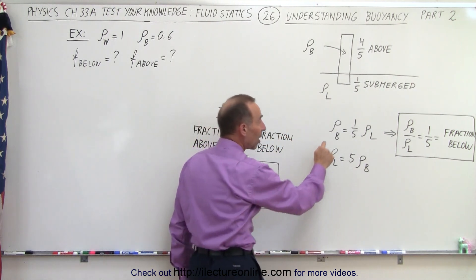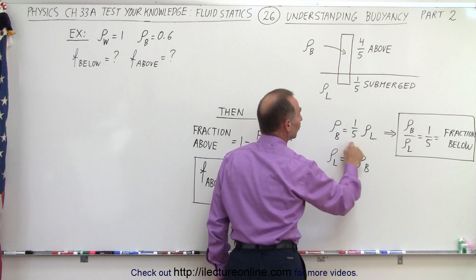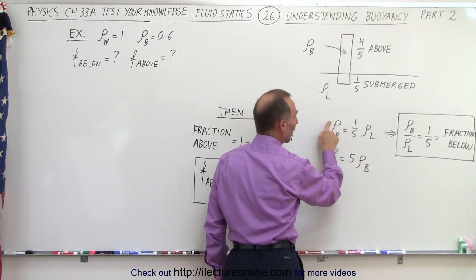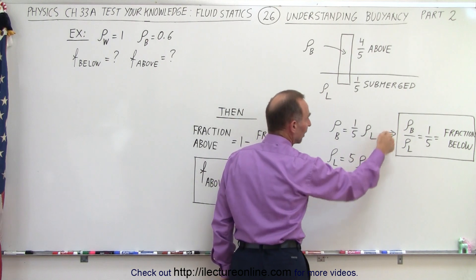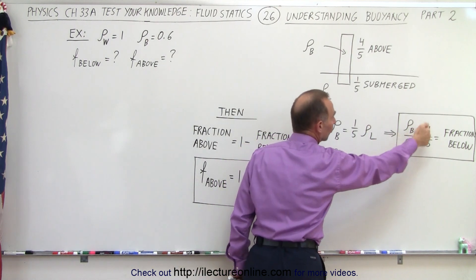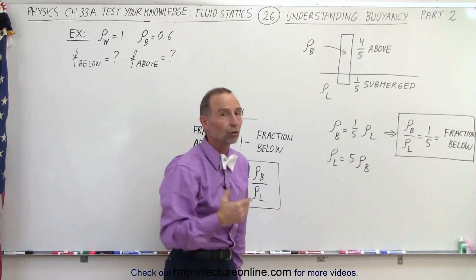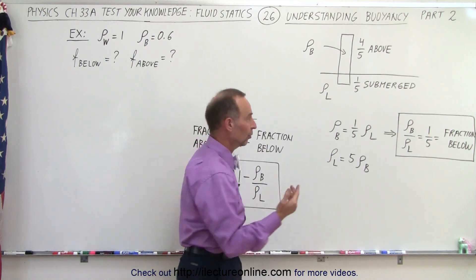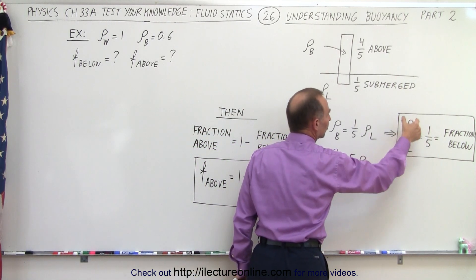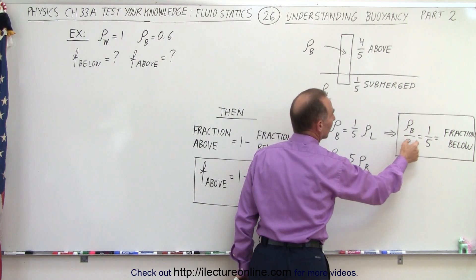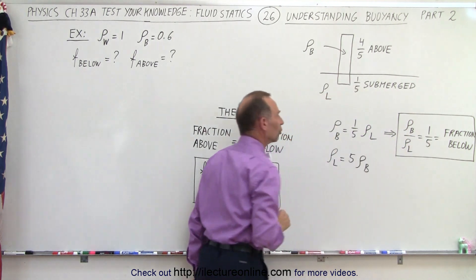If we take that equation and solve for the ratio of the density of the block divided by the density of the liquid, we get one-fifth, which is the fraction of the object below the surface. Simply said, the ratio of the density of the object divided by the density of the liquid equals the fraction of the object that's below the surface.